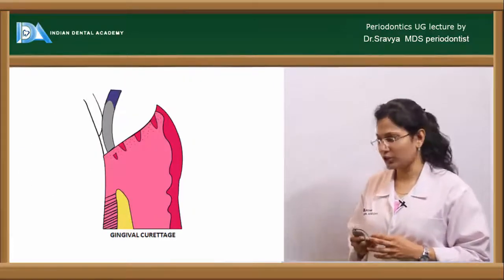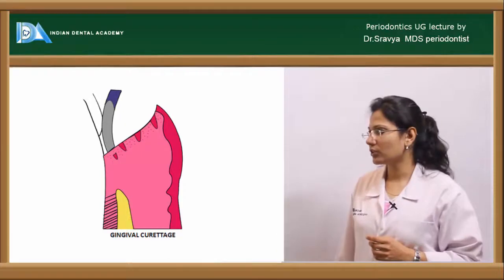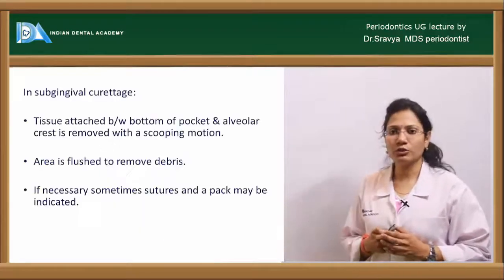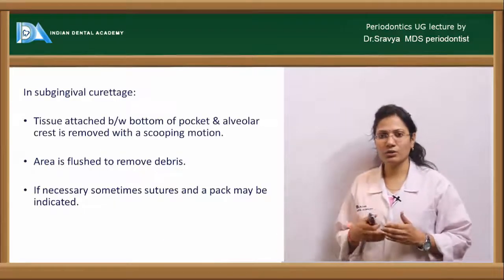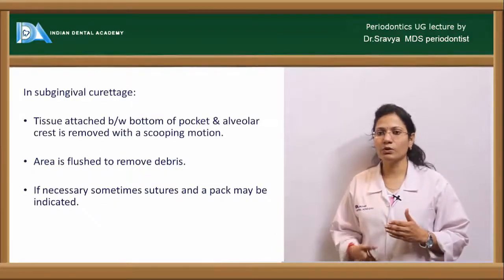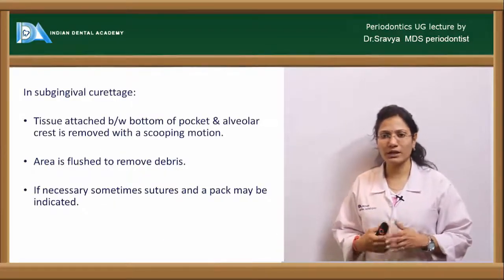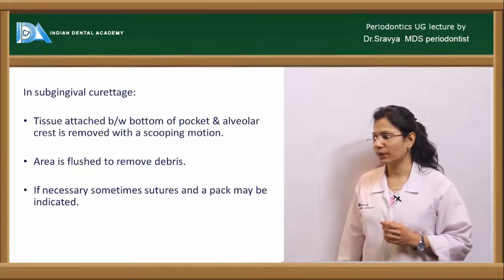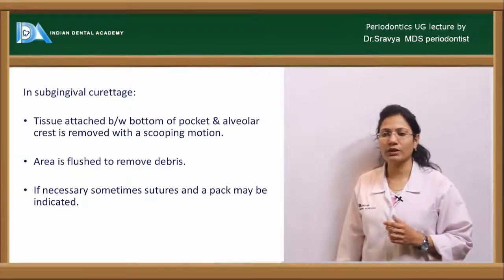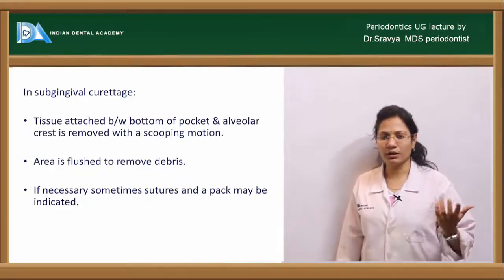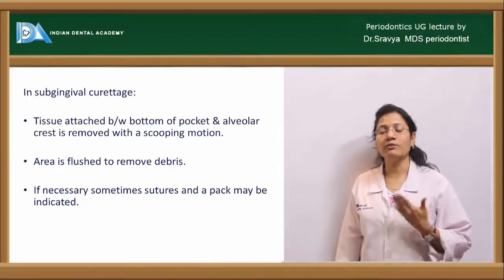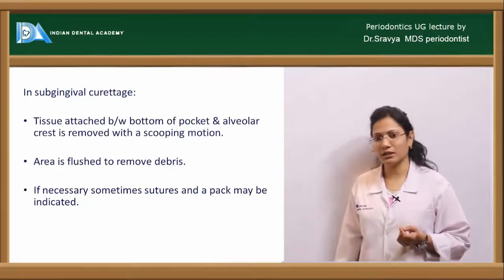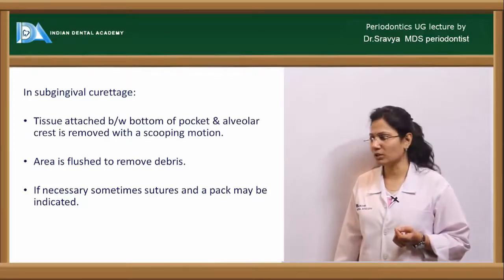In subgingival curettage, the curette is inserted more below the base of the pocket, the soft tissue wall is scraped, the area is flushed with irrigants, and if needed, suturing is done and a periodontal pack is placed — achieving pocket elimination using subgingival curettage.